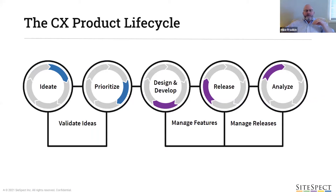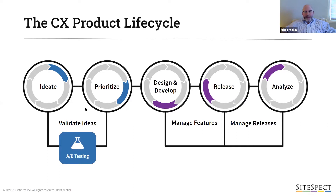When we talk with our customers about the challenges they face, we typically consider this phase-yet-repeating approach they take with fine-tuning their user experience. We call this the CX product life cycle. In the first two phases of ideation and prioritization, the challenges are to validate ideas quickly and cheaply, and to prioritize winning ideas so that changes with the greatest impact are brought to market first. A/B testing is a really effective and cost-efficient way to do that.